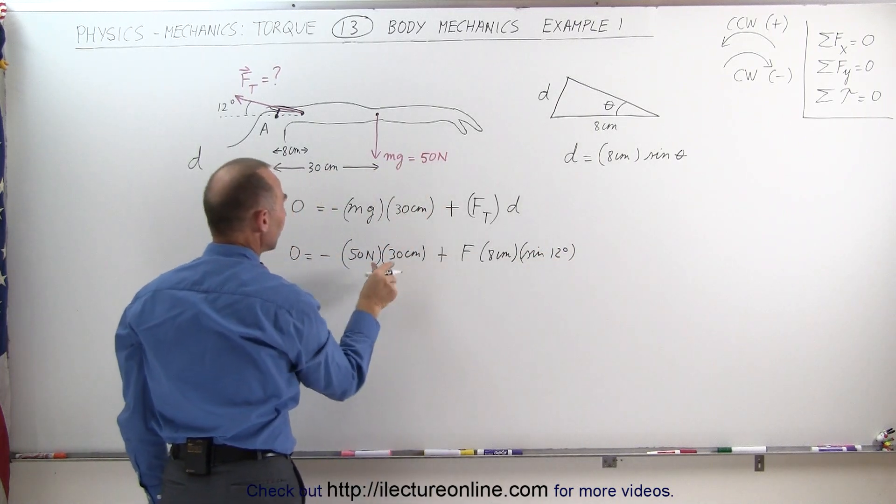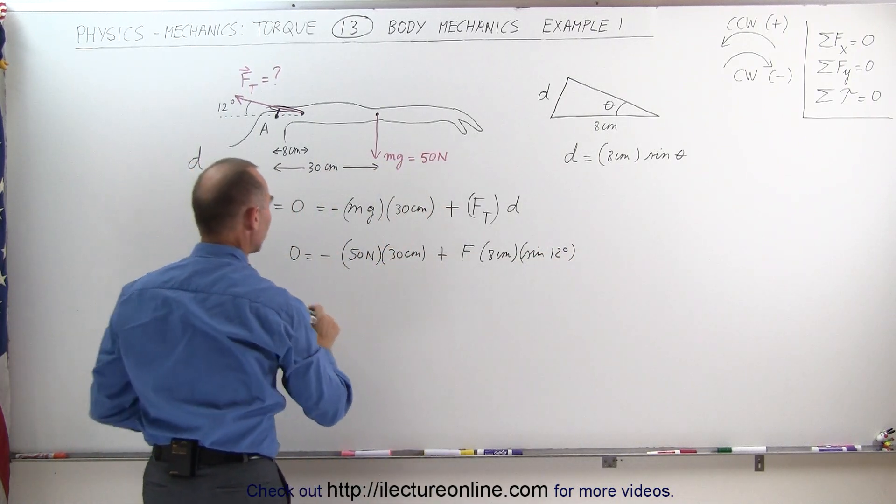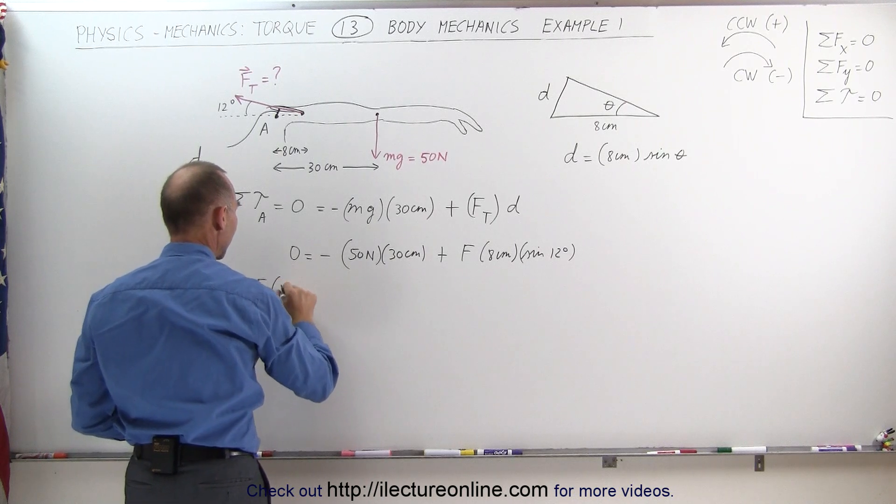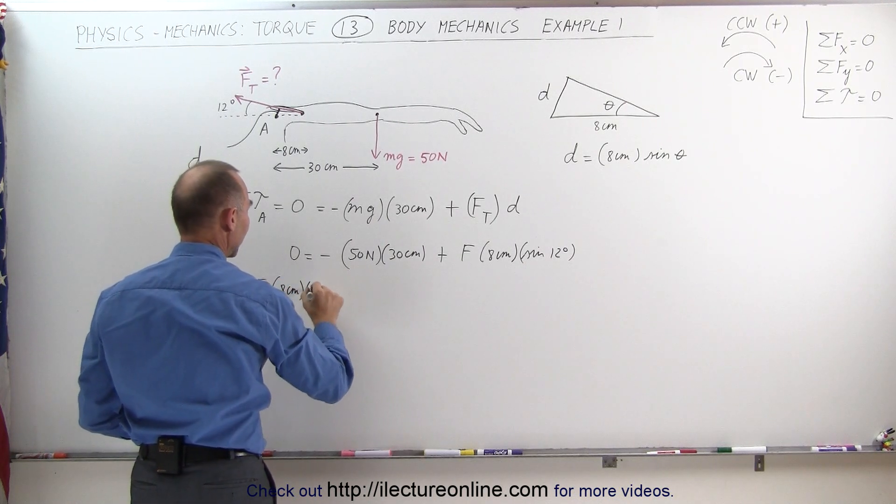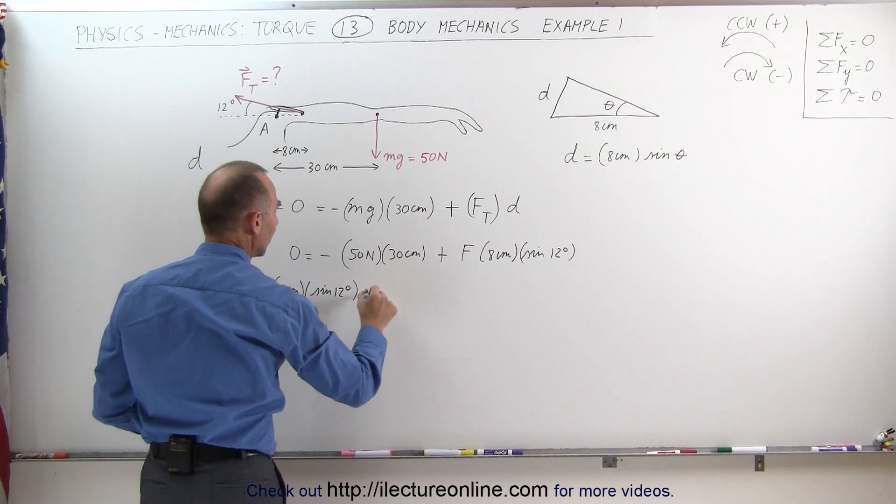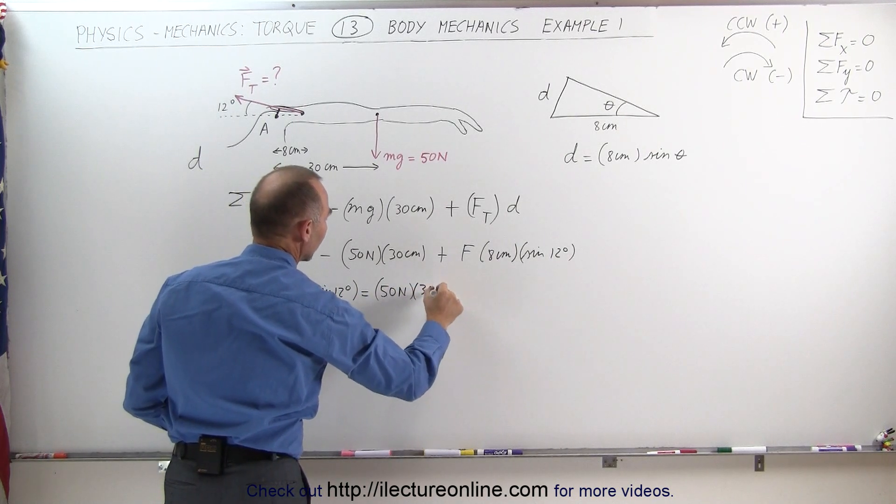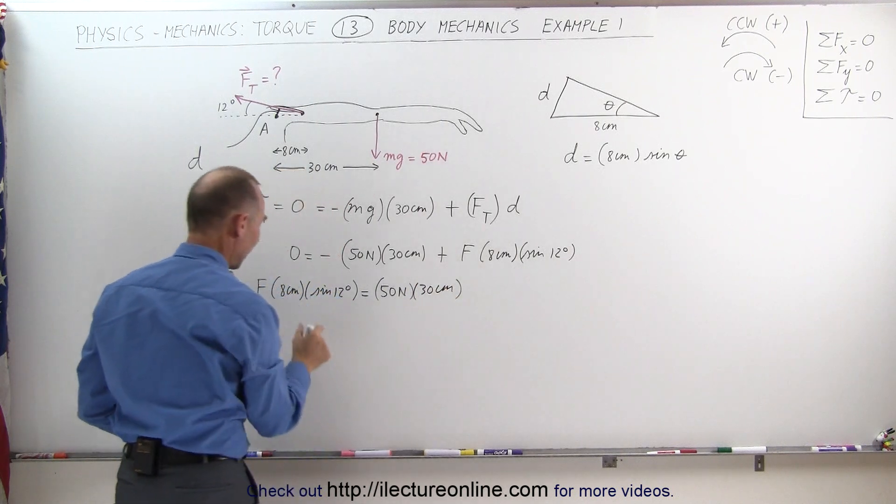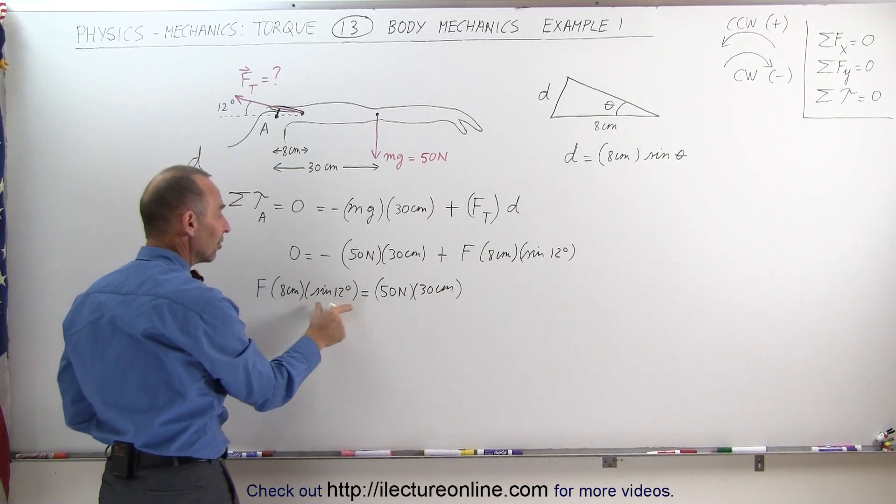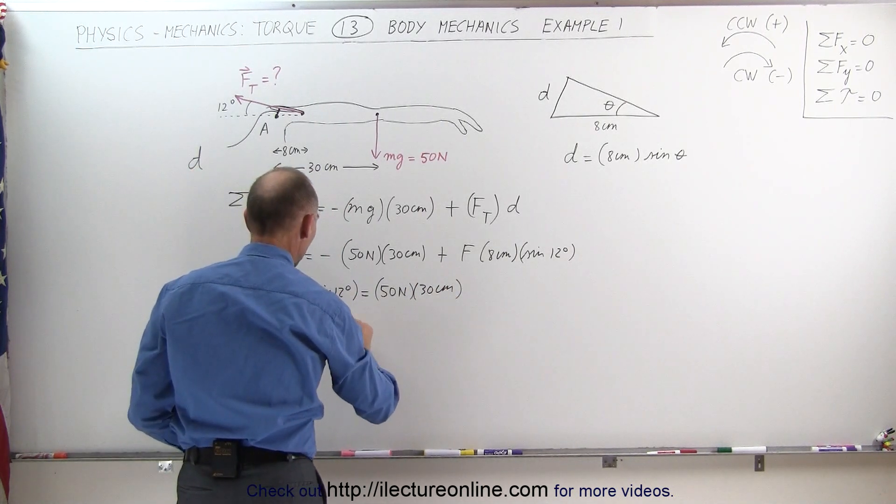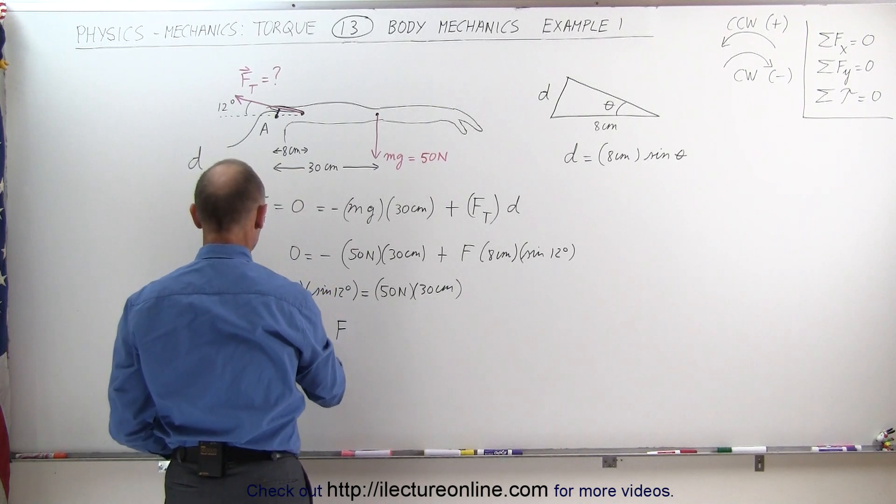Solving for F, moving this to the other side and turning the equation around, we have F times 8 centimeters times the sine of 12 degrees is equal to a positive 50 newtons times 30 centimeters. Finally, dividing both sides by 8 centimeters, then the sine of 12 degrees, we have the force, and that would be the force of the tricep.